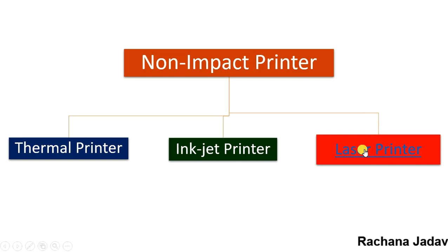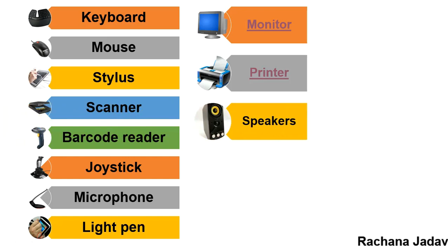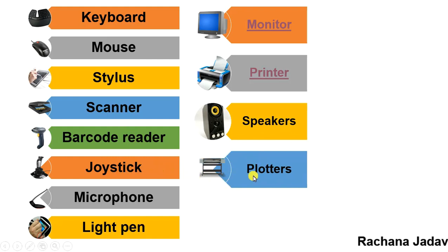The laser printer is mainly used for black and white printouts, though colored prints are also possible. Next, the speaker — everyone knows speakers are output devices used to play sound and listen to music. Plotters are like printers but used for designing — architects use flatbed plotters and drum plotters to design buildings.